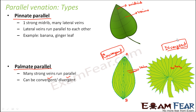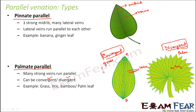An example of divergent palmate parallel would be a palm leaf. Examples of convergent palmate parallel include grass, bamboo, and rice. Once you understand the concept and keep these diagrams in mind, you will be able to remember all these types.